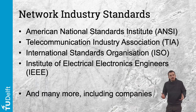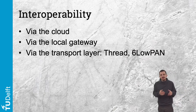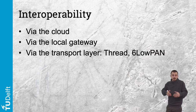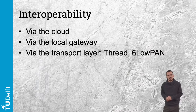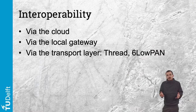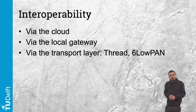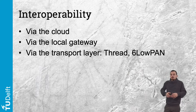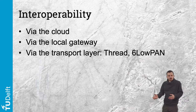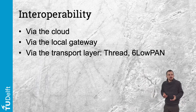There are three ways to address these interoperability challenges. First, via the cloud — this is the service-to-service internet architecture discussed in the previous module. In this case, APIs are used to bridge the gap.